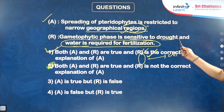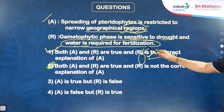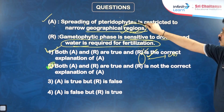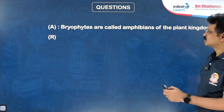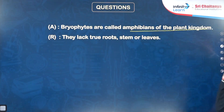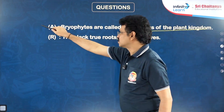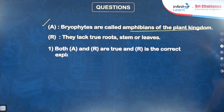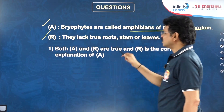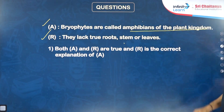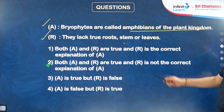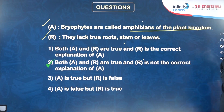Next question: Bryophytes are called amphibians of the plant kingdom — true. Reason: They lack true roots, true stems, and true leaves — also true. But lack of true organs is not the reason why bryophytes are called amphibious. Both statements are true but there is no correct explanation between them — second option.